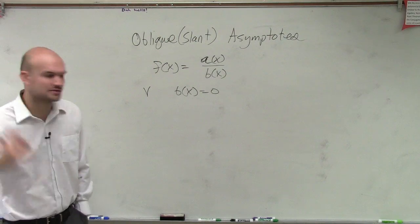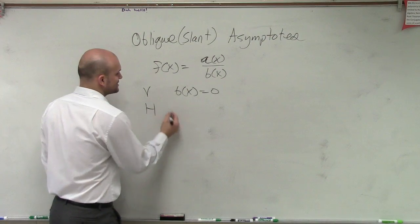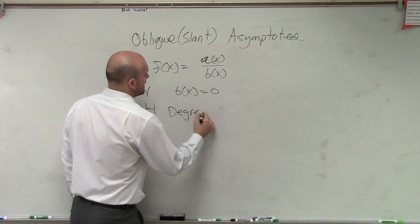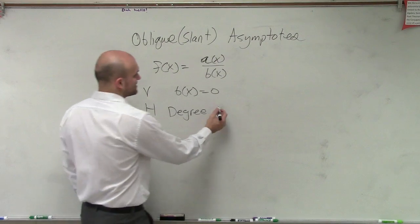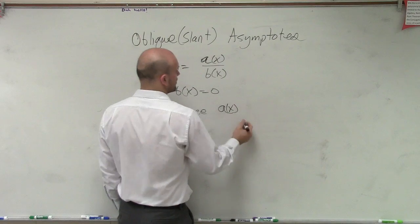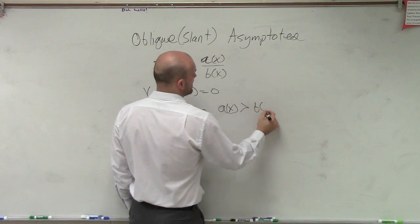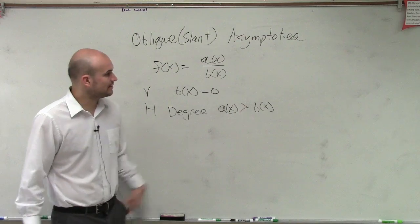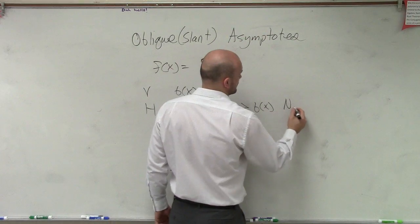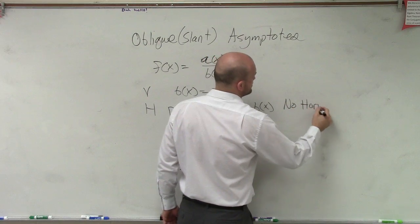I'm just doing a review to introduce oblique. Then we said the horizontal all was dependent on the degrees. And I'm going to write this differently than I wrote in your original notes. But we said when a of x was greater than b of x, when we're talking about the degree, when a of x was greater than b of x, then we had no horizontal asymptote.